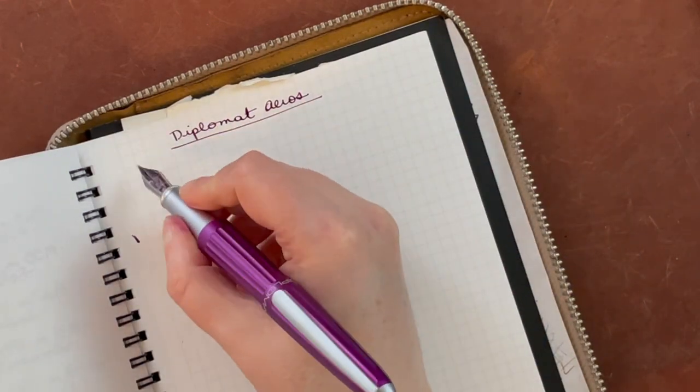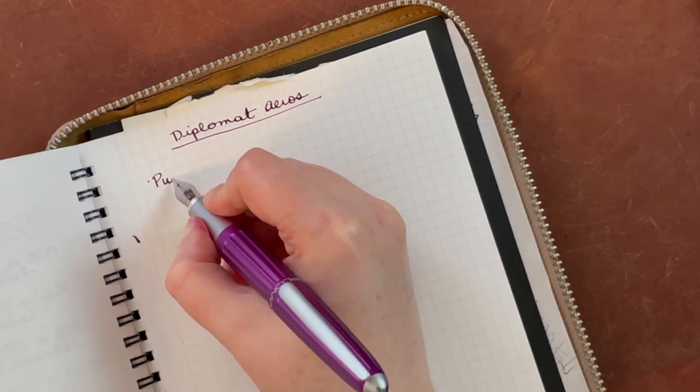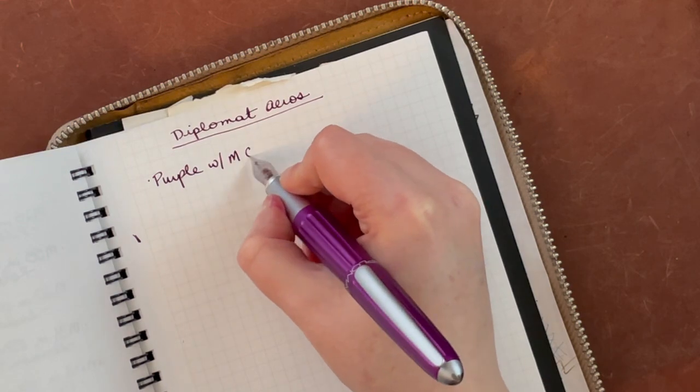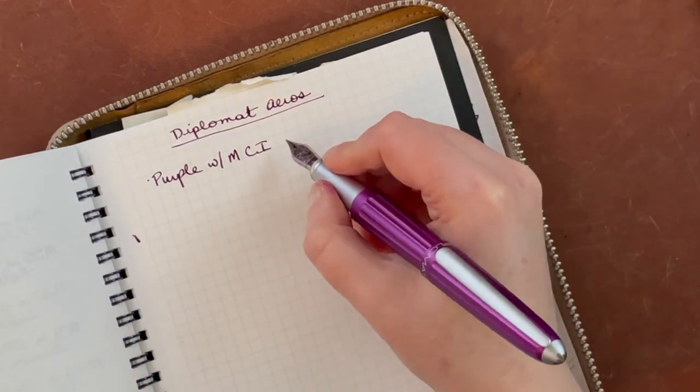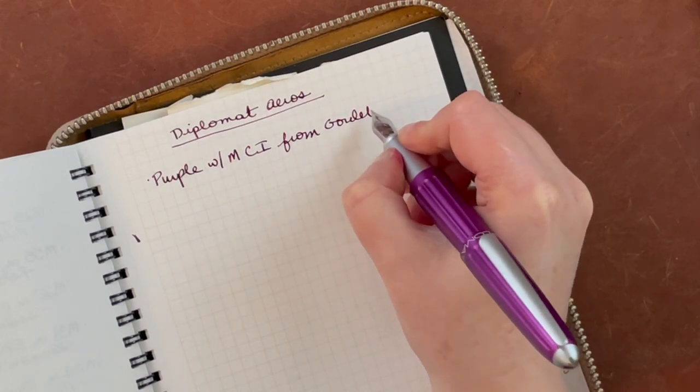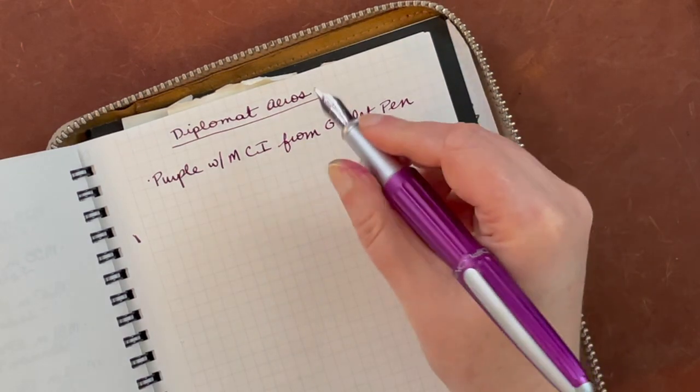So these are all Diplomat Aeros. And so this is, I'm just going to call it purple. The purple with a medium cursive italic from Goulet.